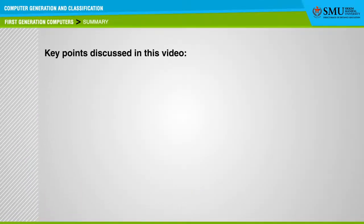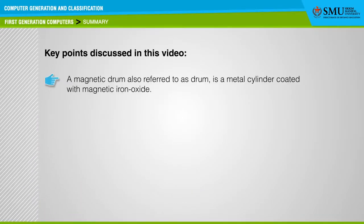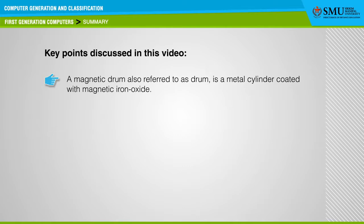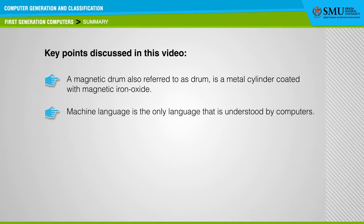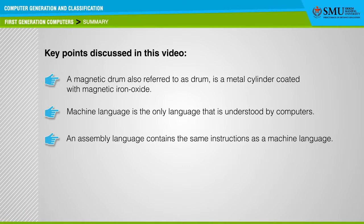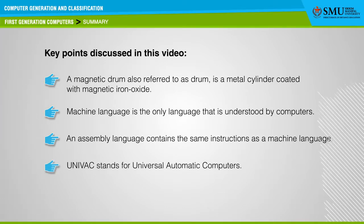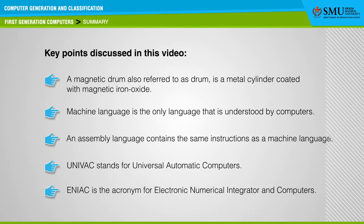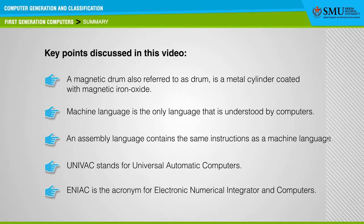Key points discussed in this video: A magnetic drum, also referred to as drum, is a metallic cylinder coated with magnetic iron oxide. Machine language is the only language understood by computers. An assembly language contains the same instructions as a machine language. UNIVAC stands for Universal Automatic Computers. ENIAC is the acronym for Electronic Numerical Integrator and Computer.